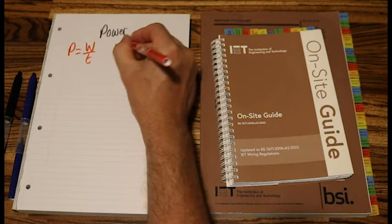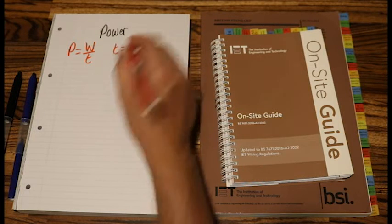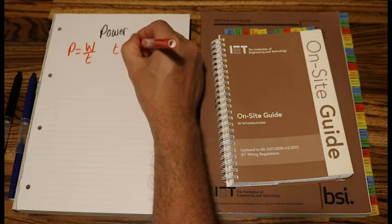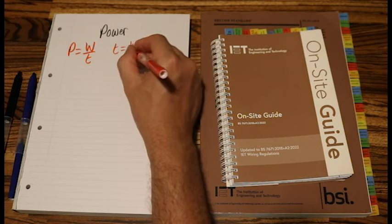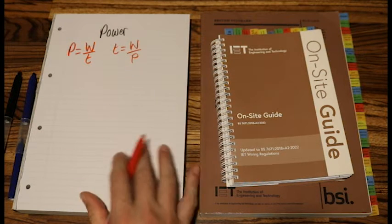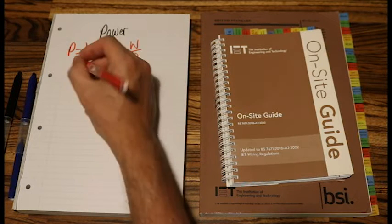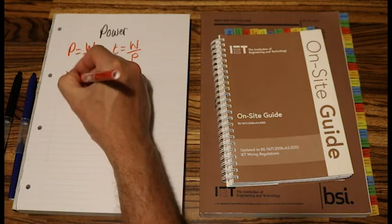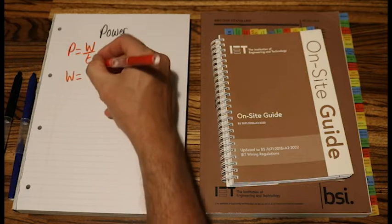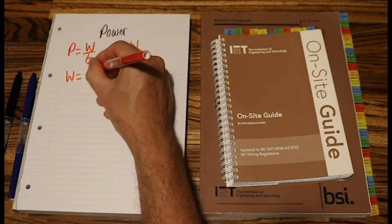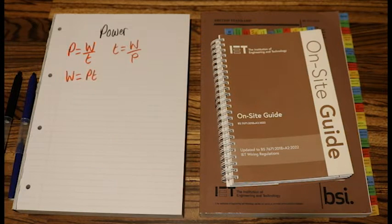And therefore our next formula will be lowercase t equals capital W over P. And the last one will be capital W equals capital P T.